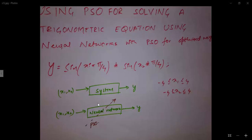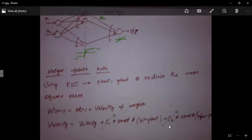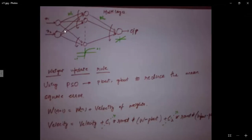We need to design a similar system using a neural network with a weight update rule based on PSO to update the weights, producing the same output y. For that, we need a multilayered neural network with a hidden layer. The number of neurons in the hidden layer depends upon the complexity of the problem. W1 and W2 are the weight vectors.